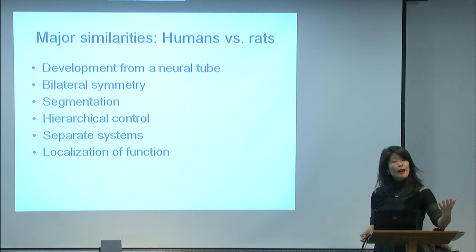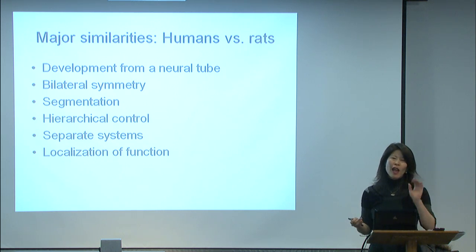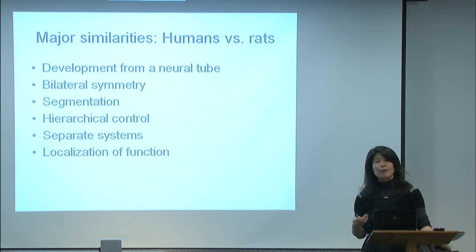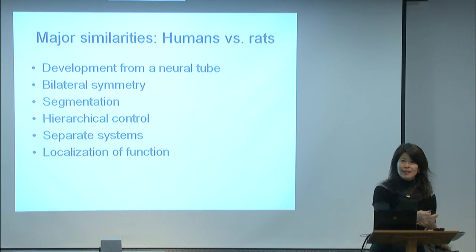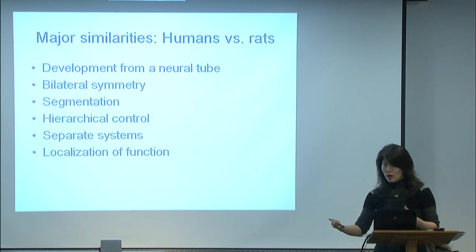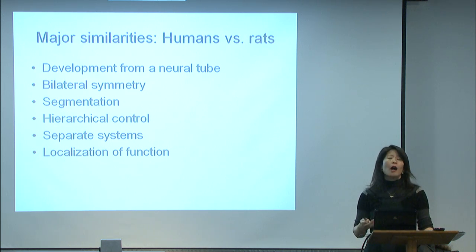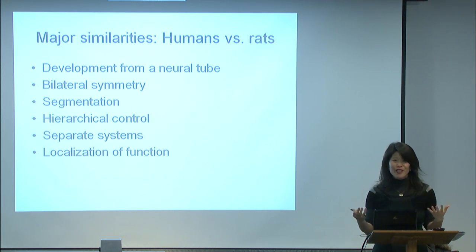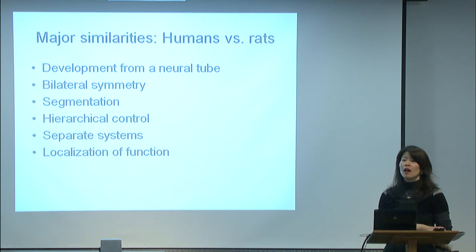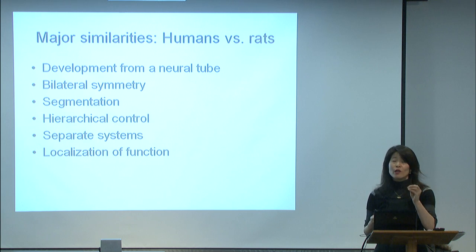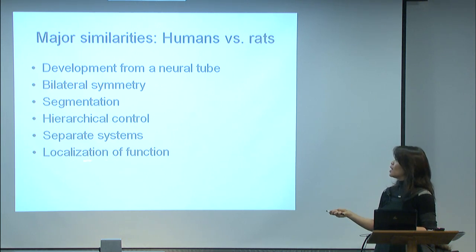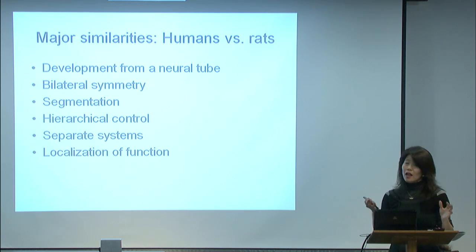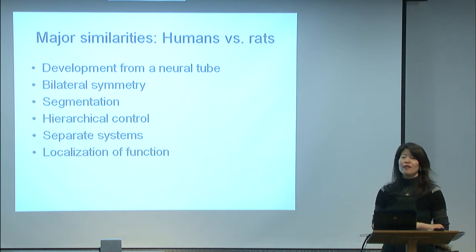There are separate systems — we're about to start the section of the class covering the visual system, auditory system, somatosensory system, and higher order cognitive systems for memory, fear, language, and attentional control. Even though these are much better developed in humans, rodents still have a similar pattern of separate brain systems that control sensory, motor, and cognitive functions. There is also localization of function in both the human and rodent brain, with lots of homologies — visual cortex is in the back in the rodent brain just like it is in the human.